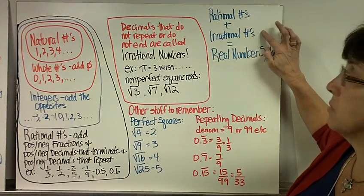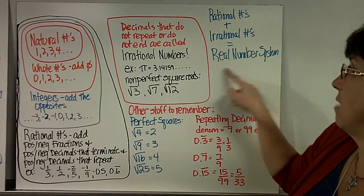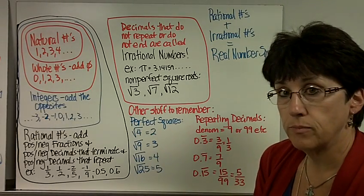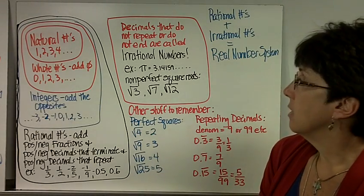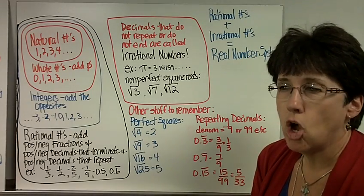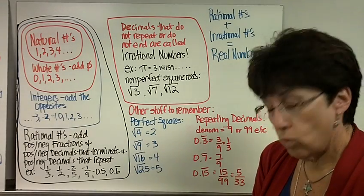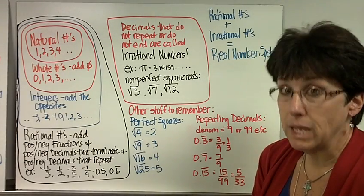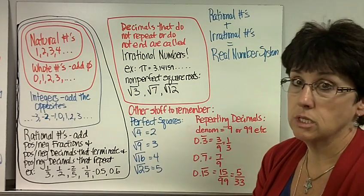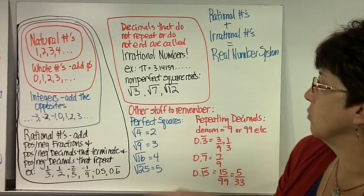Rational numbers plus irrational numbers make up your real number system. That may lead you to ask, is there a non-real number system? Well, yes — there are imaginary numbers, but you don't do those until 10th grade, Algebra 2.